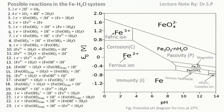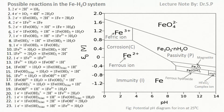At potentials more positive than minus 0.6 V and at pH values below about pH 9, ferrous ion (Fe²⁺) is the stable substance. This indicates that iron will corrode under these conditions.